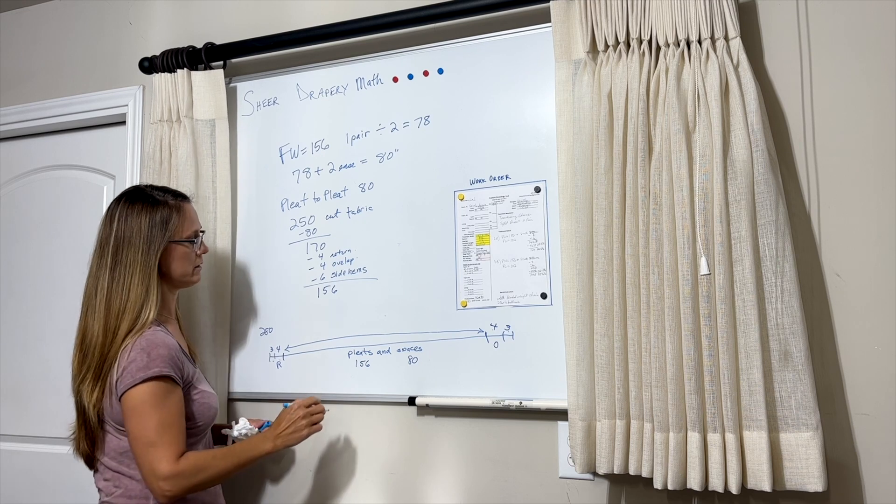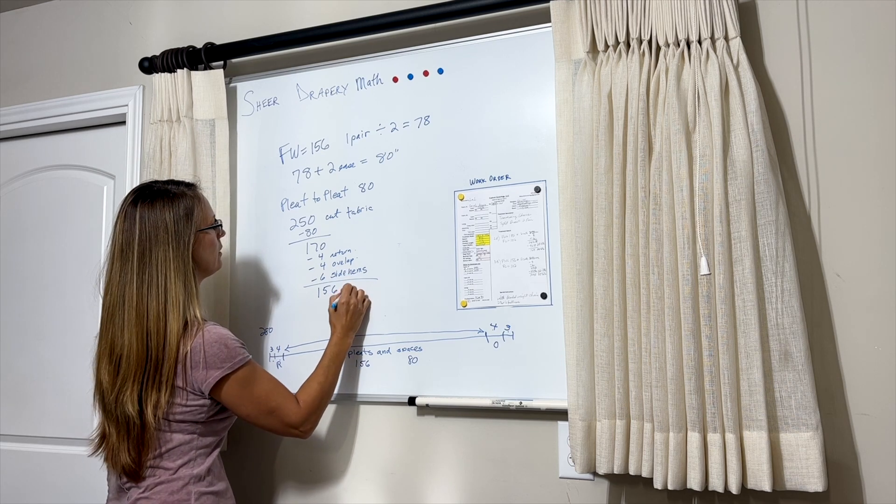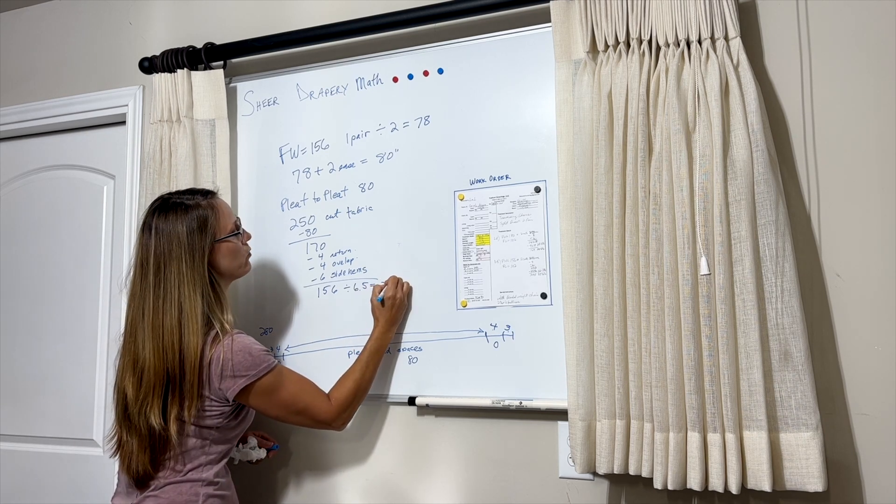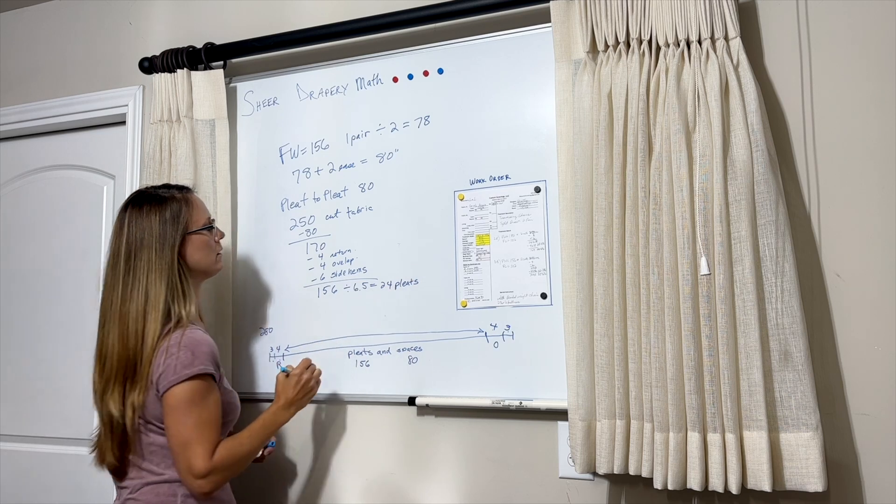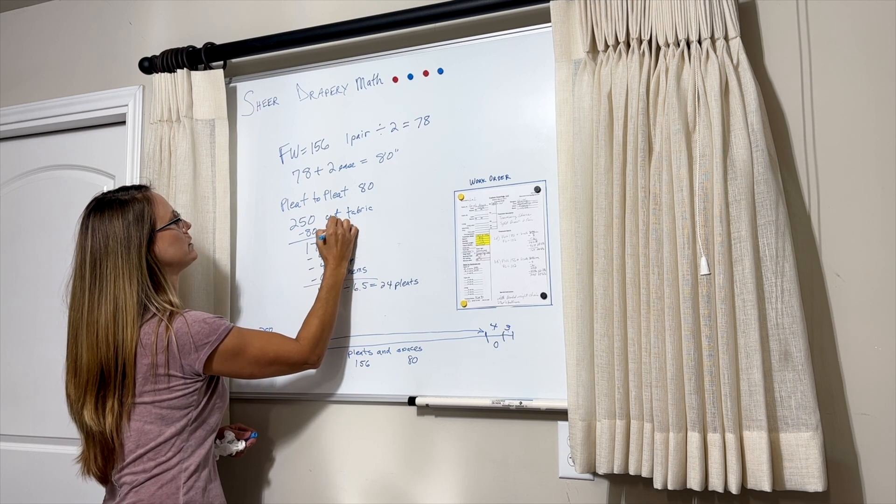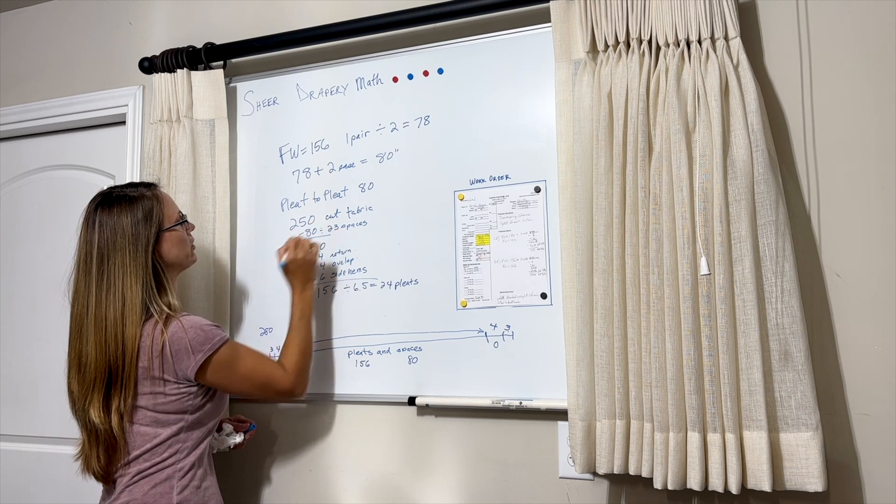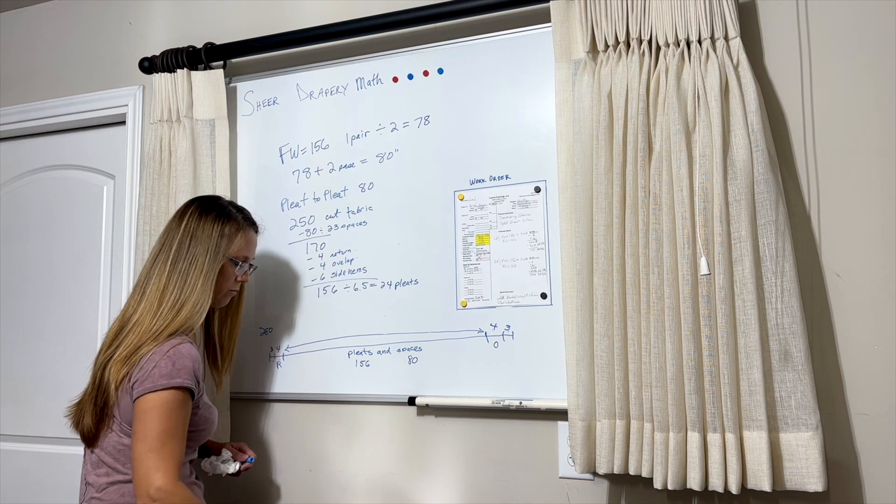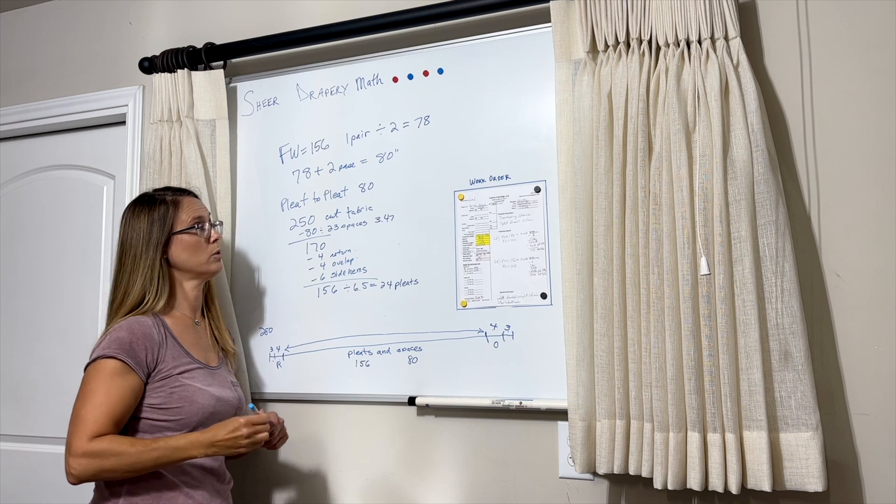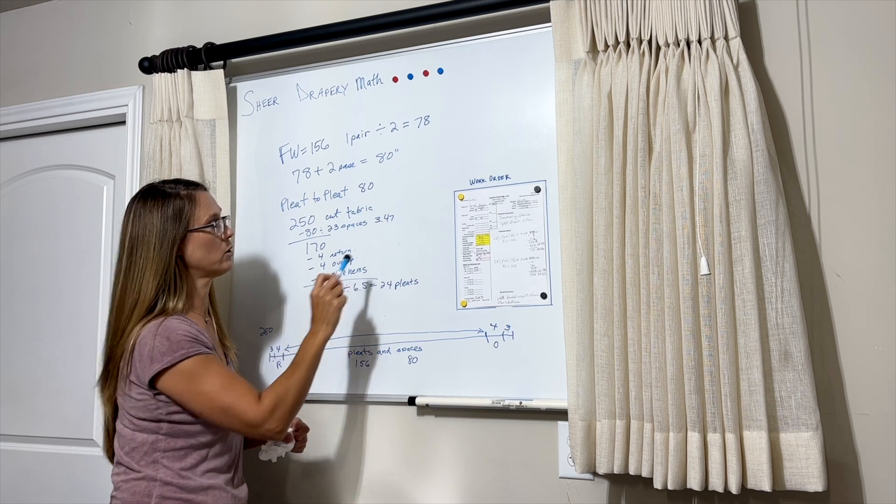So the 156 is how much we have for pleats, and the 80 is how much we have for spaces. So knowing that yesterday the pleats were 6.5, let's see what happens when we divide 156 by 6.5. That means we need 24 pleats, and if we have 24 pleats then we need 23 spaces. So then we just do the calculation: 80 divided by 23, and that is 3.47, which is close to 3.5, and our spaces from yesterday were 3.75, which is kind of close.